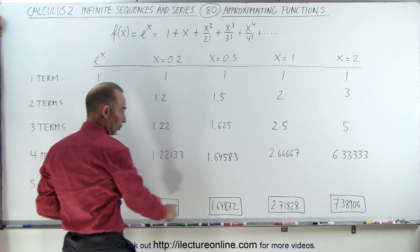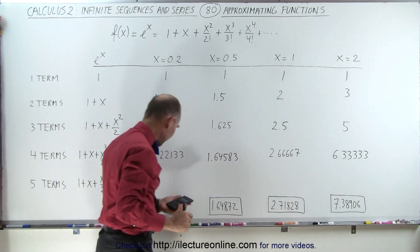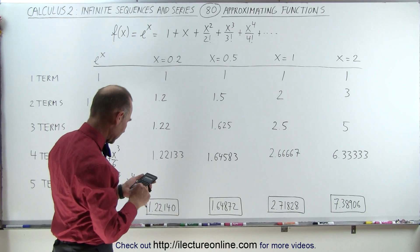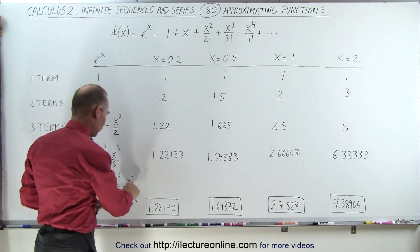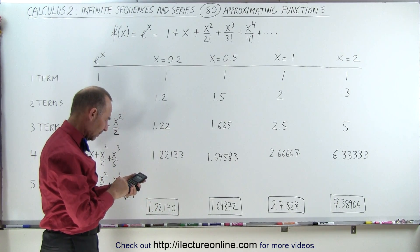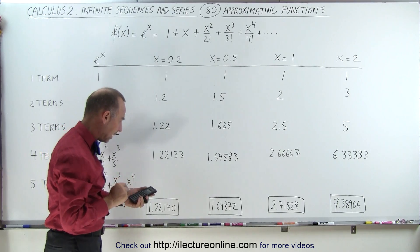So now we add one more term. So now we're going to add plus 16 divided by 24. And we get 7.